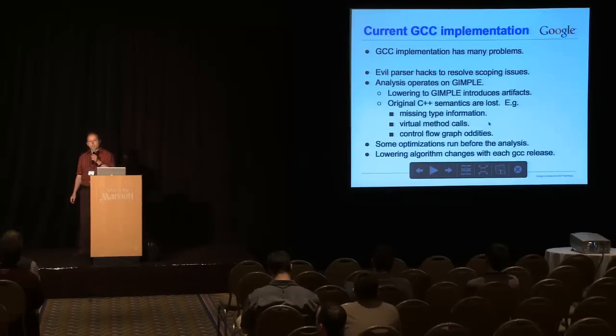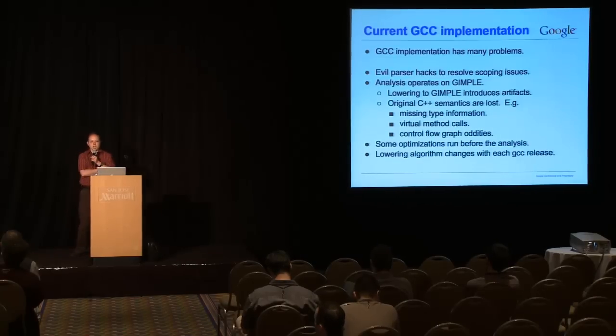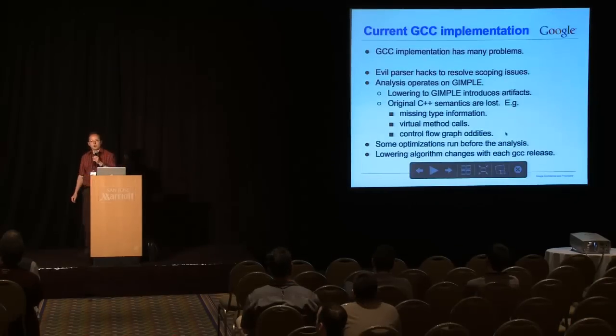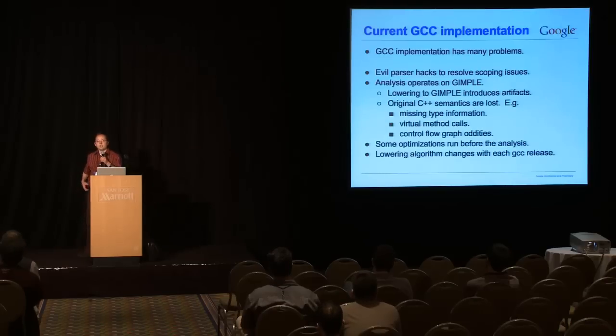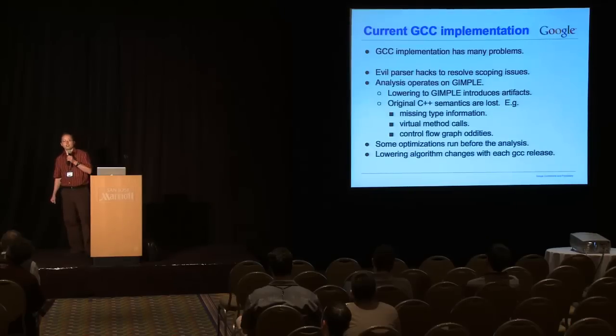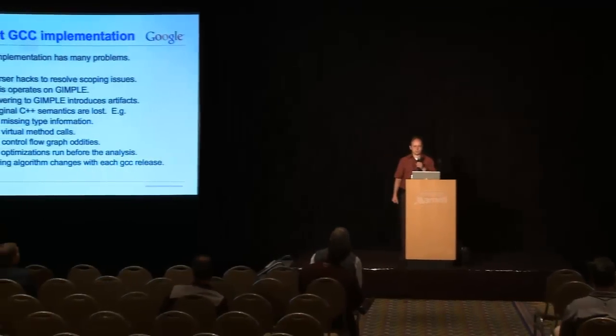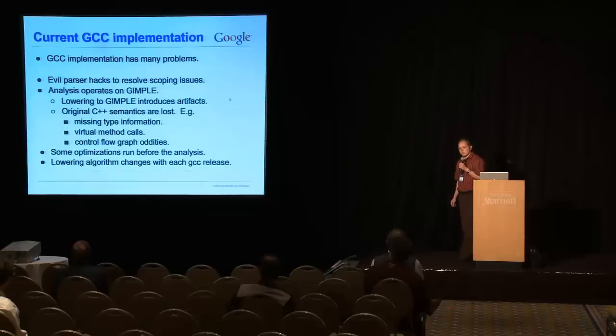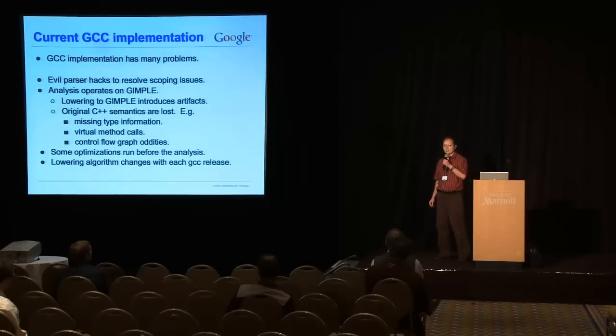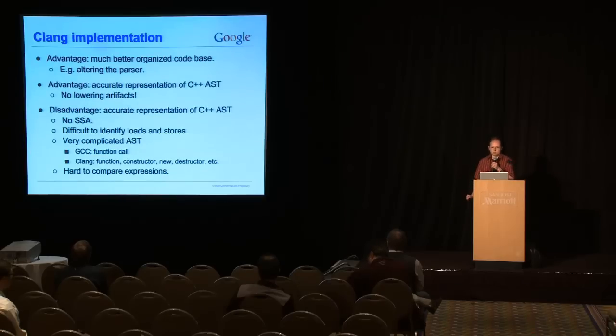Virtual method calls turn into a bunch of pointer arithmetic operations to actually grab the function pointer. So trying to trace back and find your virtual method declaration is a pain. You get control flow graph oddities, because the lowering algorithm decides to be overly clever in its attempts to share code. We also get fun optimizations that are declared as local optimizations that are supposed to run after the analysis, but have non-local effects on the whole program, thus effectively running before the analysis and confusing things. And the last fun part of working with GCC is the lowering algorithm changes dramatically with every new release. So every time upstream releases a new version, suddenly we get thousands and thousands of false positives in the analysis.